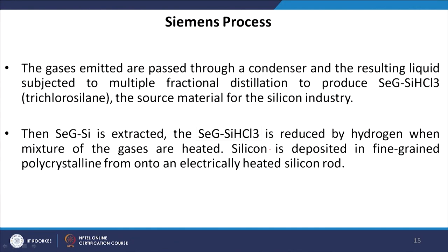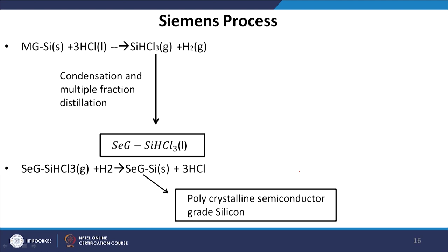Fractional distillation in the Siemens method is used to produce trichlorosilane (SiHCl₃), which is the source material for the silicon industry. This trichlorosilane is then used to extract the silicon. The reaction starts with metallurgical grade silicon (MG-Si) reacting with 3 HCl (hydrochloric acid), producing chlorosilane SiHCl₃ as a gas plus hydrogen. So silicon reacts with HCl to make SiHCl₃ and hydrogen.